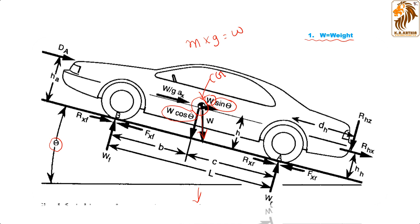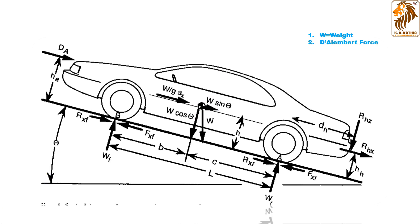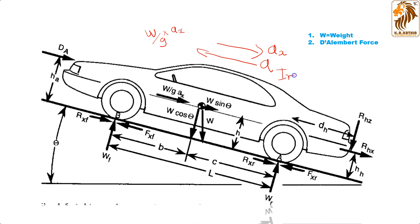The second force is called D'Alembert's force. D'Alembert's force is actually a resultant of the acceleration of the vehicle. If the vehicle is accelerating along the road, it is convenient to represent this effect by an equivalent internal force known as D'Alembert's force, denoted by (W/g) × a in the x-direction. This means if your vehicle is moving forward with acceleration a, this force acts in the opposite direction.